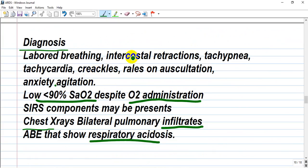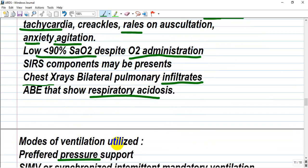How do we diagnose ARDS? Labored breathing, intercostal retraction, tachypnea, tachycardia, agitation, anxiety, and crackles on auscultation widely. Low saturation despite oxygen administration by facial mask usually, and SIRS components may be present. Also, chest X-ray is useful because it will show bilateral pulmonary infiltrates, and acid-base equilibrium will show respiratory acidosis.